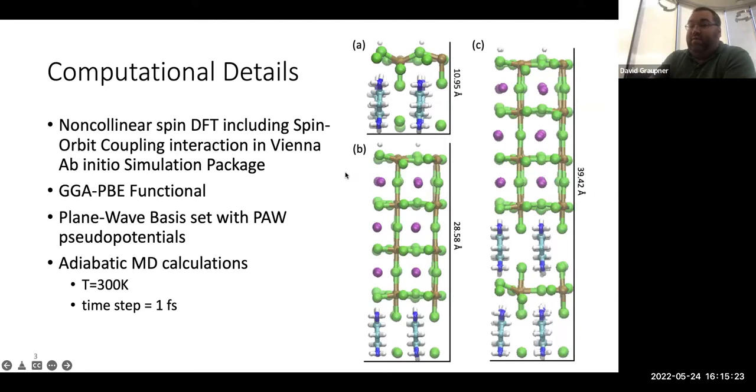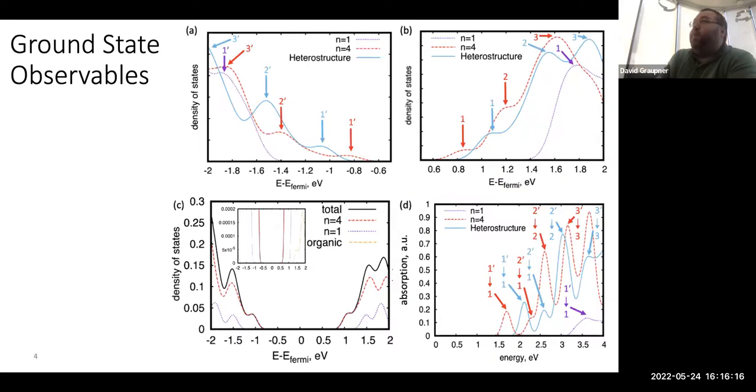The models that I'm looking at today specifically are a model here where there's a single perovskite layer, a single of single thickness, and here we have four perovskites thick in the perovskite layer. And then here we have a vertical heterostructure where we combine the two single-layer perovskites. I did these calculations using non-collinear spin DFT including the spin-orbit coupling interaction in VASP using the GGA-PBE functional and the plane-wave basis set with projected augmented wave pseudopotentials.